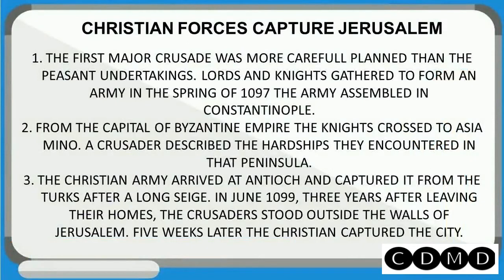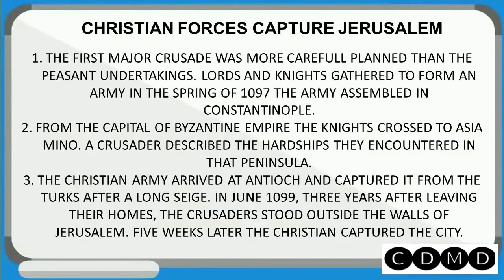Christian forces captured Jerusalem. The first major crusade was more carefully planned than the peasants' undertaking. Lords and knights gathered to form an army in the spring of 1097 and assembled in Constantinople. From the capital of the Byzantine Empire, the knights crossed to Asia Minor. The Christian army arrived at Antioch and captured it from the Turks after a long siege. In June 1099, three years after leaving their homes, the crusaders stood outside the walls of Jerusalem. Five weeks later, the Christians captured the city.